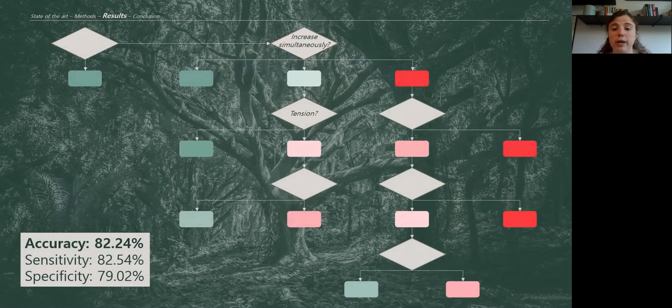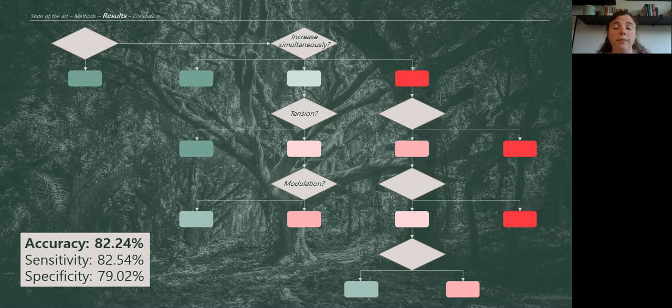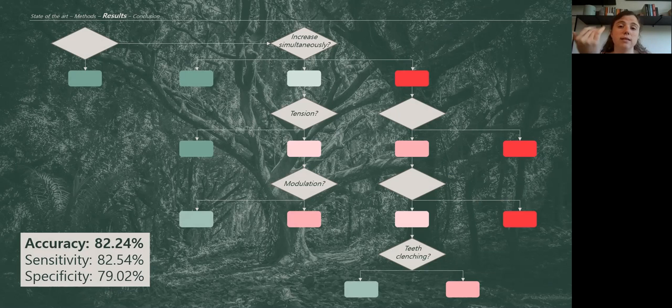Next, we also included the parameter of tension in the suboccipital muscles with, of course, the higher the degree of tension in these muscles, the higher the chances of having somatosensory tinnitus. The ability to modulate tinnitus with certain movements and the presence or absence of teeth clenching. You can see that especially these two last parameters are really quite far down the decision tree. So they will only be important for a certain subset of patients. And in any case, they're way less important than this first parameter that I discussed of these tinnitus and neck or jaw complaints increasing or decreasing simultaneously.